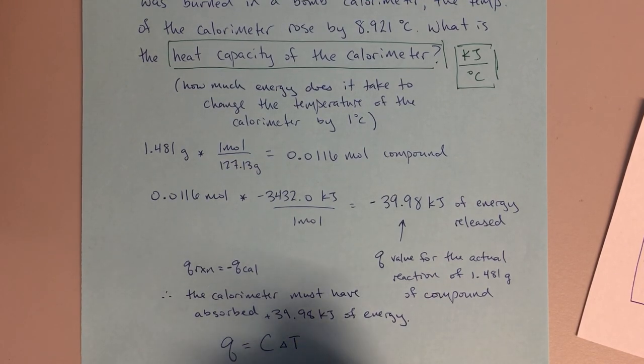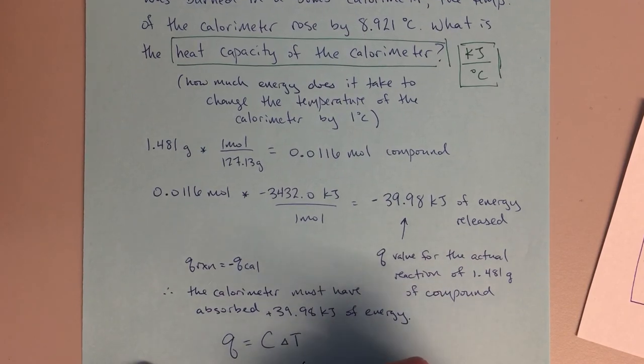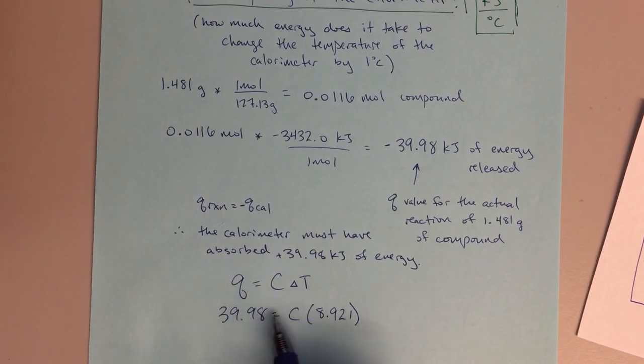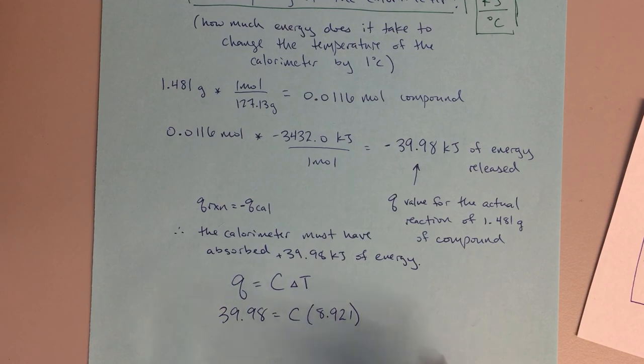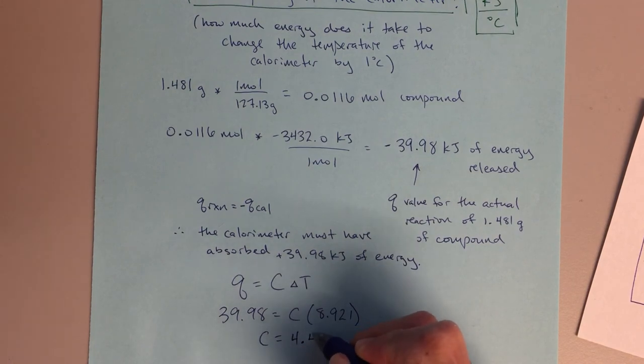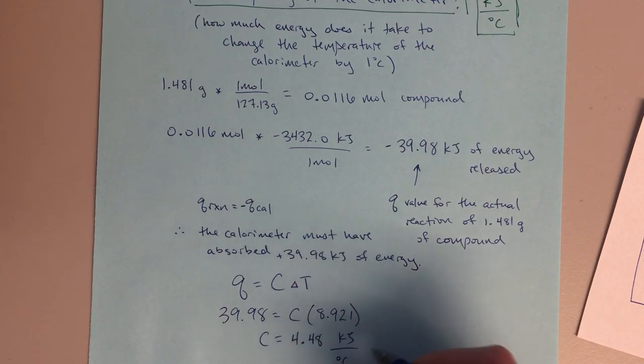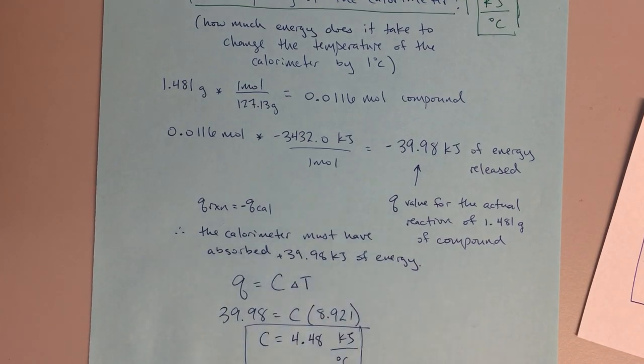39.98 equals C, and my delta T was given as 8.921. So just plugging my numbers in: my Q value from the point of view of the calorimeter is 39.98, it's absorbing that energy. C value, my temperature change, how much the temperature increased for this system. Calculate that for C: C equals 4.48 kilojoules per degree Celsius. That is my final answer.